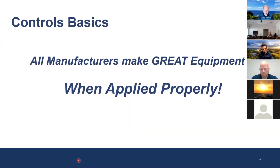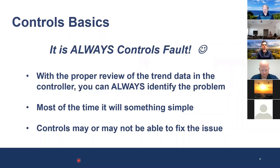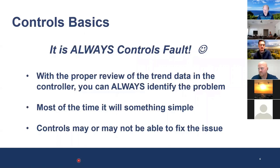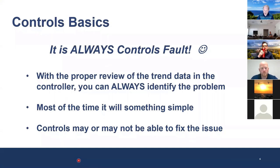Manufacturers would go out of business if they did not make great equipment, so I start with that. If I pick on any manufacturer, remember I'm picking on them in the guise of a misapplication. The next statement: it is always controls fault. We became a controls contractor as well, controlling our own equipment. We did that because if you review the trend data, you can always identify the problem. Controls may or may not be able to fix the issue, but we look at everything from a controls scenario. I try and teach from the standpoint of stories.